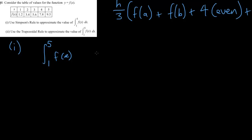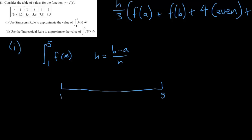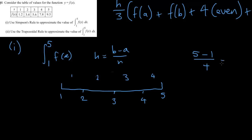Let's figure out H first. H equals B minus A over N. Drawing this out, you have a number line from 1 to 5 with points at 2, 3, and 4 in between. Your sub-intervals are 1 to 2, 2 to 3, 3 to 4, and 4 to 5 — that's 4 sub-intervals. So you do B minus A over N: 5 minus 1 over 4, which gives 4 over 4, which is just 1. So H equals 1.